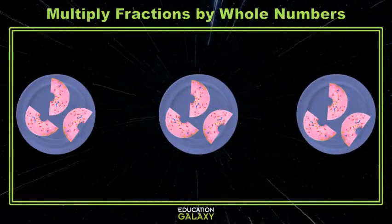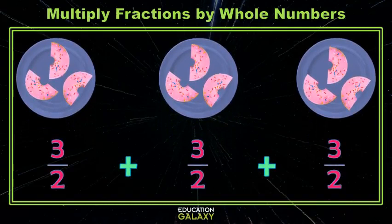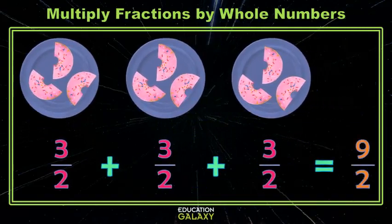Here, each of my plates has three halves donuts. So, if we wanted to know the total number of donuts, we could still add three halves three times. And we know that that comes out to nine halves. Yes, because we add the numerators and leave the denominators.